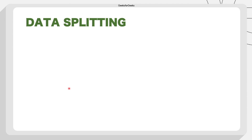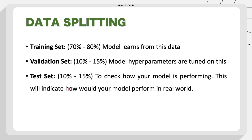Then comes data splitting. Once we have processed our data and done the data wrangling, we split it into training, validation, and test sets. When the model is learning, we give it training data, which is typically 70 to 80 percent. Once the model has learned, we give it a validation set to see how the model is working and perform hyperparameter tuning. After that, we feed the test data and compare the model's predictions with actual outputs to indicate how the model will perform in the real world.